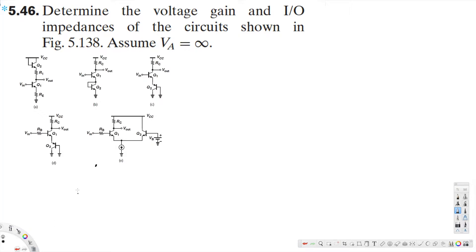Let's look at this problem. The question is asking to determine the voltage gain and input/output impedances of the circuits shown in Figure 5.138. Assume beta is equal to infinity.